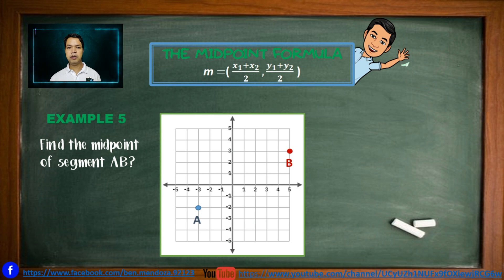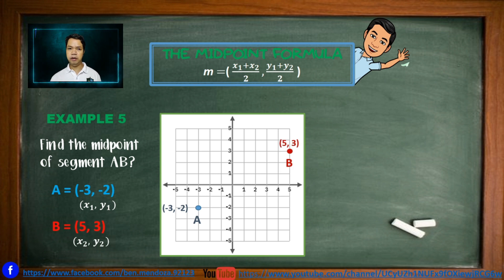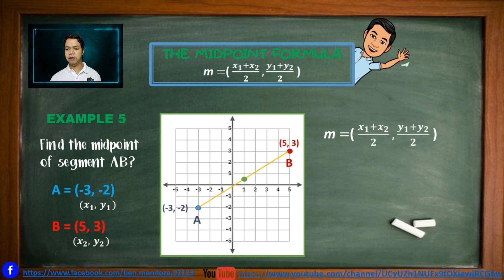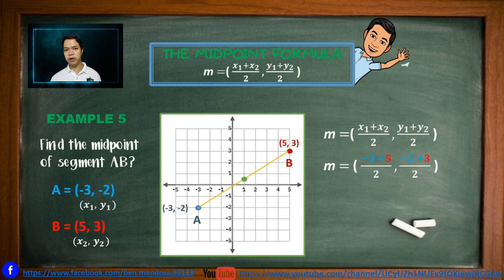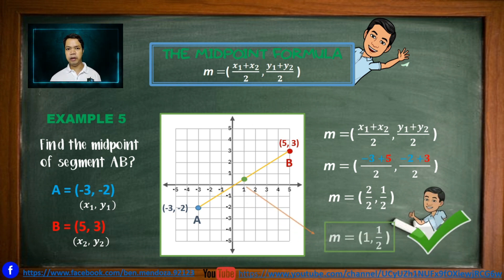Example number 5: Find the midpoint of segment AB. Point A is located in quadrant 3 with a coordinate of (negative 3, negative 2), while point B is located in quadrant 1 with a coordinate of (5, 3). Substituting into the midpoint formula, M equals ((negative 3 plus 5) over 2, (negative 2 plus 3) over 2), which becomes (2/2, 1/2), giving us the midpoint at (1, 1/2), still located in quadrant 1.